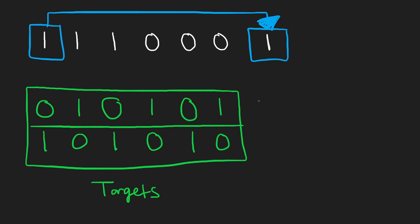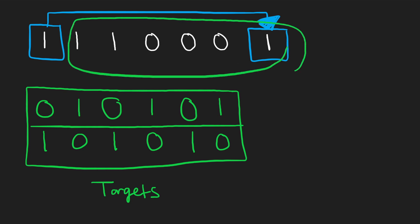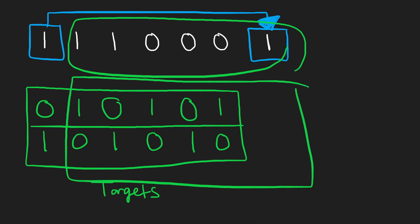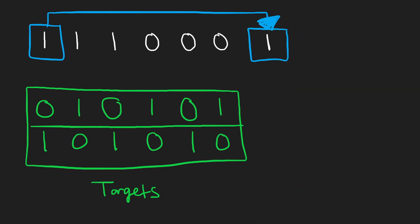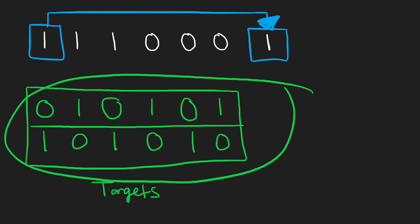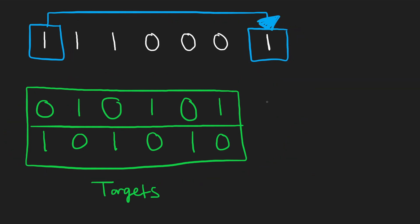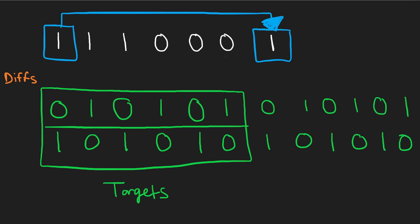Wouldn't it be easier if the string we're comparing to the two target strings actually lined up nicely? We can do that because we can just take these two alternating target strings and extend them as much as we need to — add more alternating characters, and do the same thing with the other alternating target string.